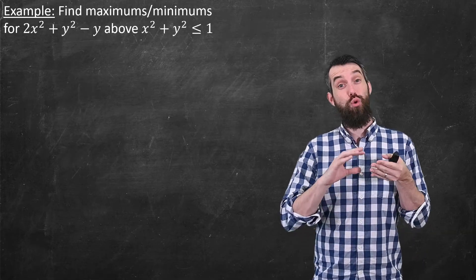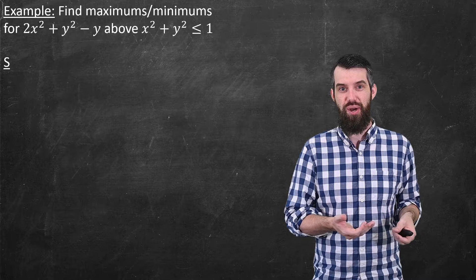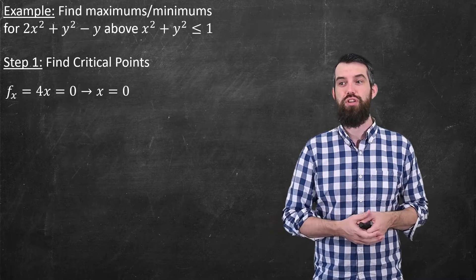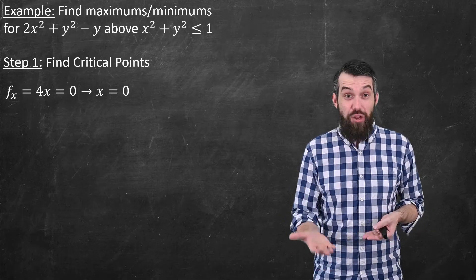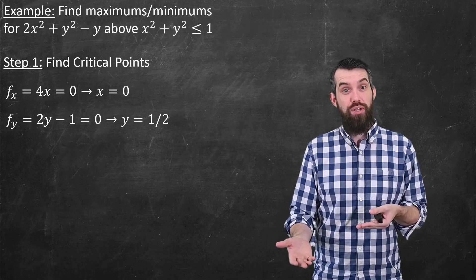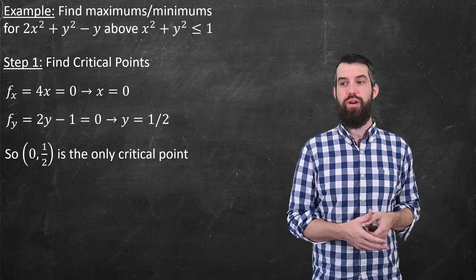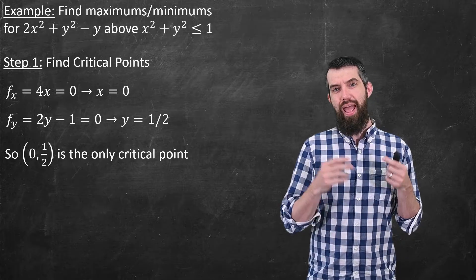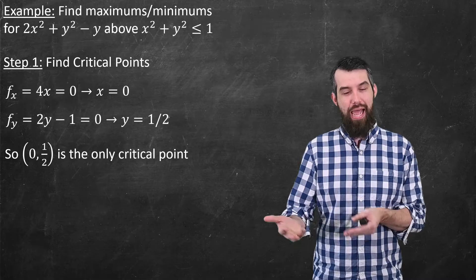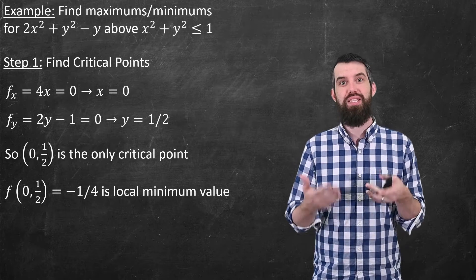Let's first run through the computation to find the global minimum on the interior. Applying the previous method: the partial derivative with respect to x is 4x, setting that equal to zero gives x = 0. The partial derivative with respect to y is 2y - 1, setting that equal to zero gives y = 1/2. So the only critical point is (0, 1/2). Plugging into 2x² + y² - y gives a function value of -1/4.